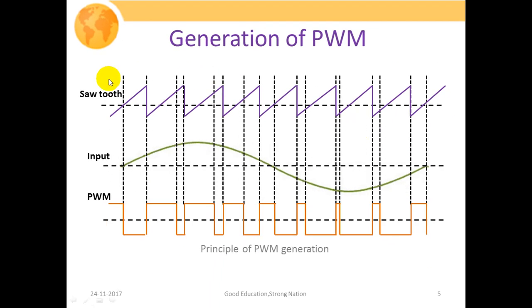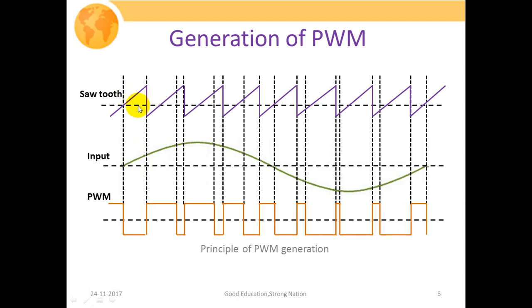This figure shows the principle of PWM waveform generation. The upper waveform shows the carrier sawtooth pulse, the green waveform shows the message signal, and the orange waveform shows the pulse width modulated waveform. The comparator compares the instantaneous value of the sawtooth carrier pulse and the instantaneous value of the message signal. In the duration where the input signal value is less than the sawtooth waveform, it generates negative pulses.